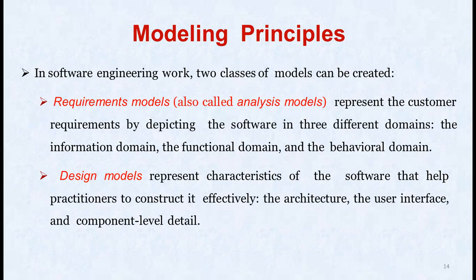The intent is to provide feedback that can be used to change misinterpretations and correct modeling mistakes. In software engineering, the modeling principles involve two classes of models. The first is requirement models — also called analysis models — which represent the customer requirements by describing the software in three different domains: the information domain, the functional domain, and the behavioral domain. The second is design models, which represent characteristics of the software that help practitioners construct it effectively, noting the architecture, user interface, and component-level details.